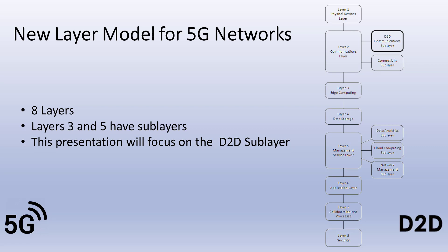Rahimi et al. proposed a new layer model for 5G networks. This model is divided into eight interconnected layers that facilitate two-way data exchange, designed to take advantage of the 5G IoT architecture and make it simple and convenient for scalability, analysis, and modularity. The layers include the physical device layer, the communications layer — which contains direct device-to-device communications and connectivity sublayers — edge computing layer, data storage layer, management service layer with sublayers for network management, cloud computing and data analytics, application layer, collaboration and processing layer, and the security layer. This presentation will concentrate on the direct device-to-device communications sublayer.